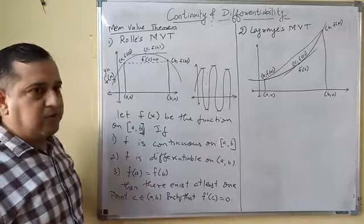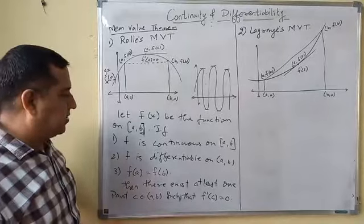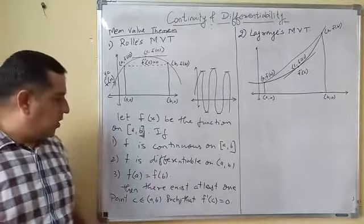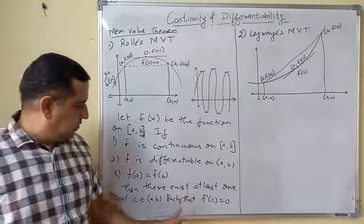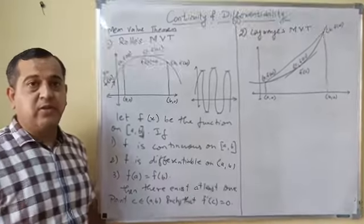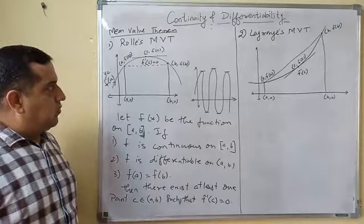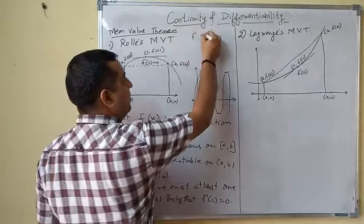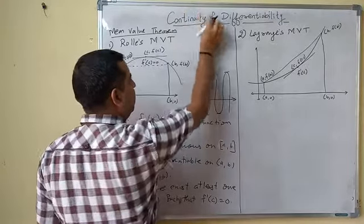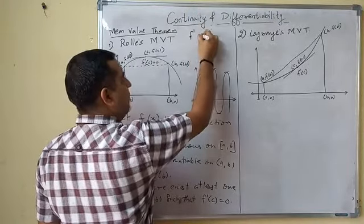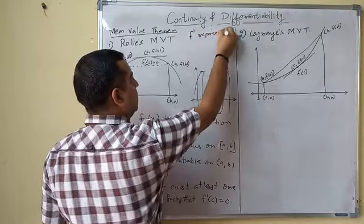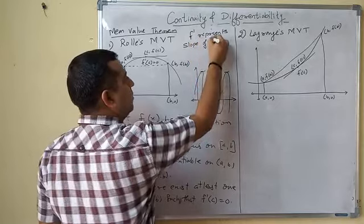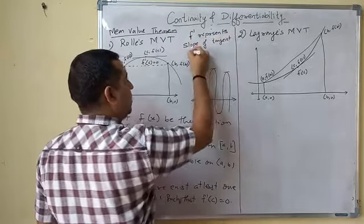If f(a) is equal to f(b), then there exists at least one point c such that f'(c) is equal to 0. For this, remember one thing: f' represents slope of tangent.